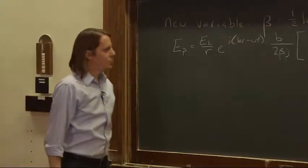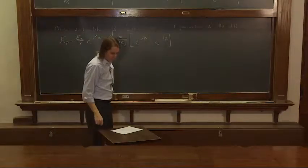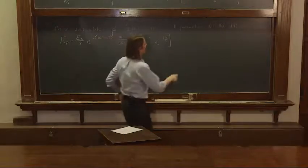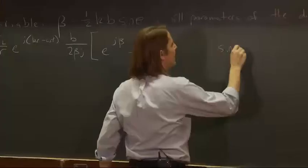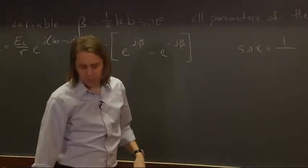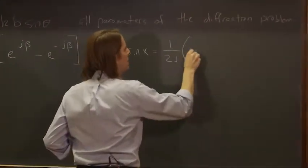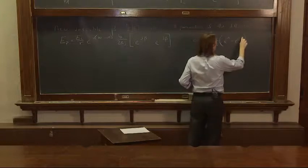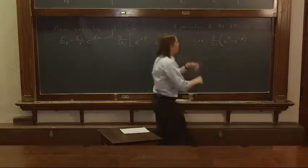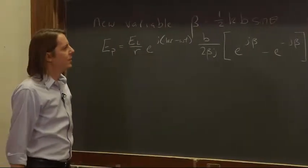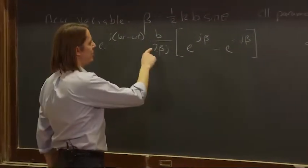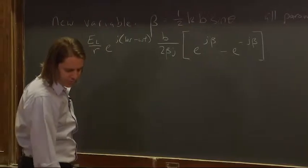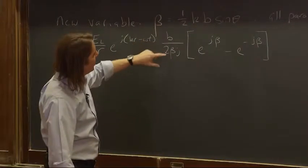That substitution, in addition to having all the stuff that happens in one parameter, also makes a very useful expression. Because if you think about Euler's formula, you know that sine of anything x equals 1 over 2j, e to the jx minus e to the minus jx. And what that means is we can replace 2j all this with just sine of beta. It simplifies it down to just being sine of beta. So we end up with sine of beta over beta.